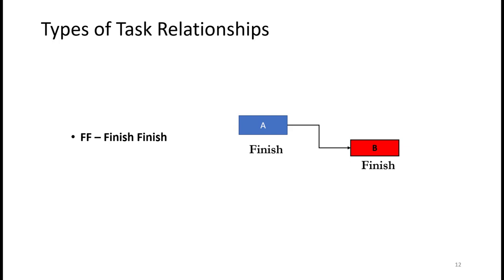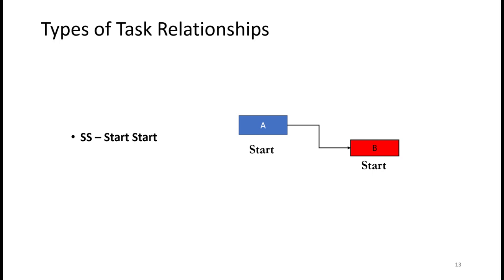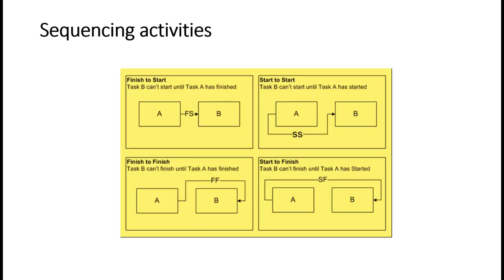Another type of relationship is called Finish-to-Finish, where task B can only finish when task A is finished. Another type is called Start-to-Start, or SS, where B can only start when A starts. This diagram shows the various types of relationships — Finish-to-Start, Start-to-Start, Finish-to-Finish, and Start-to-Finish — that must be kept in mind when creating network diagrams, as they determine the dependencies between tasks.